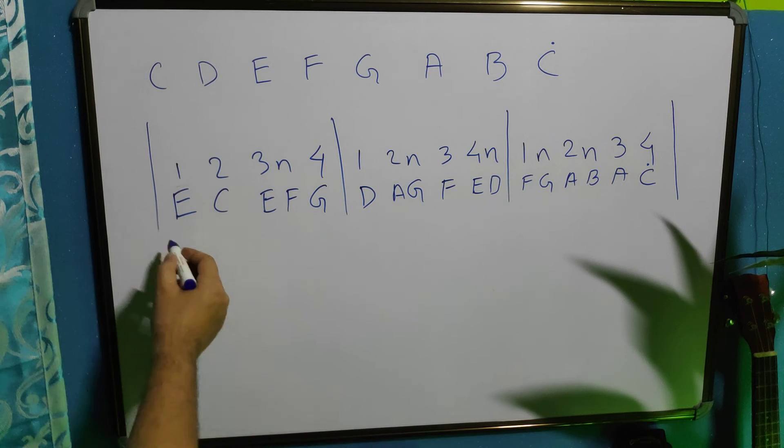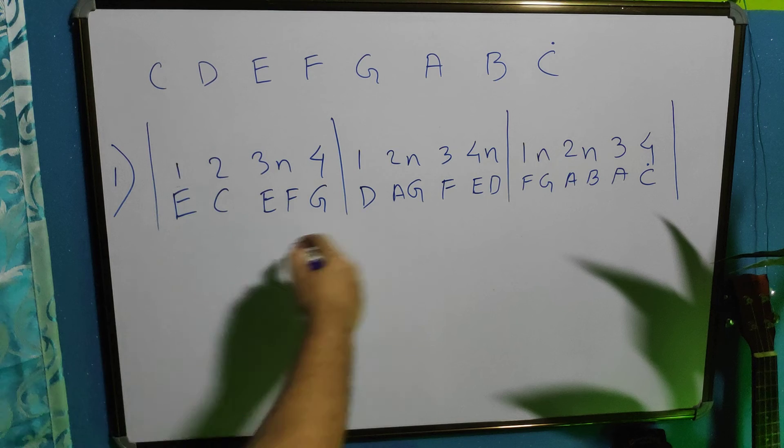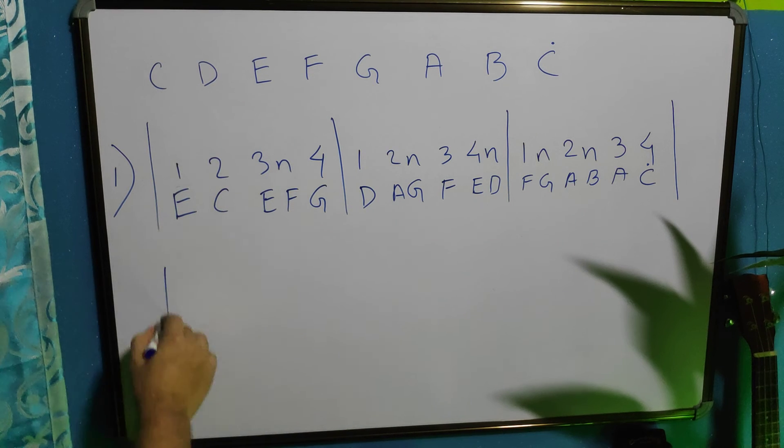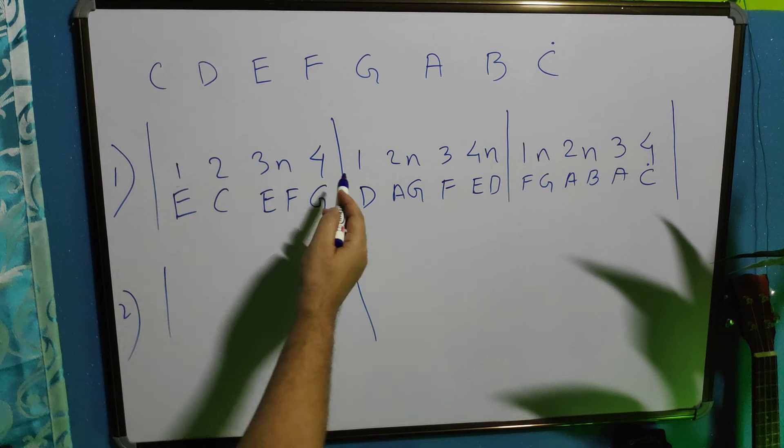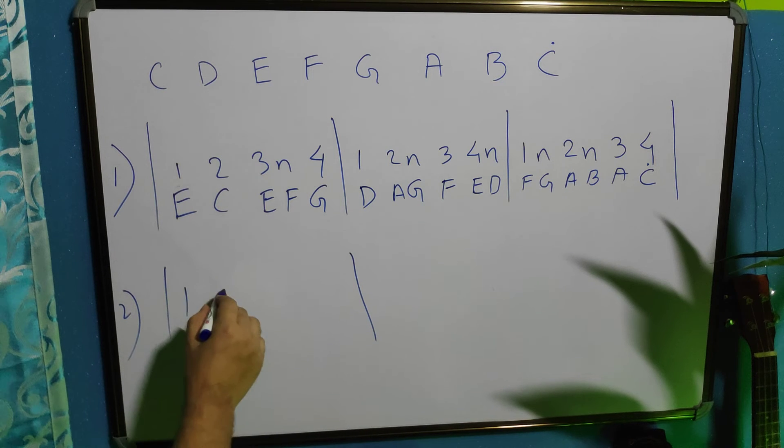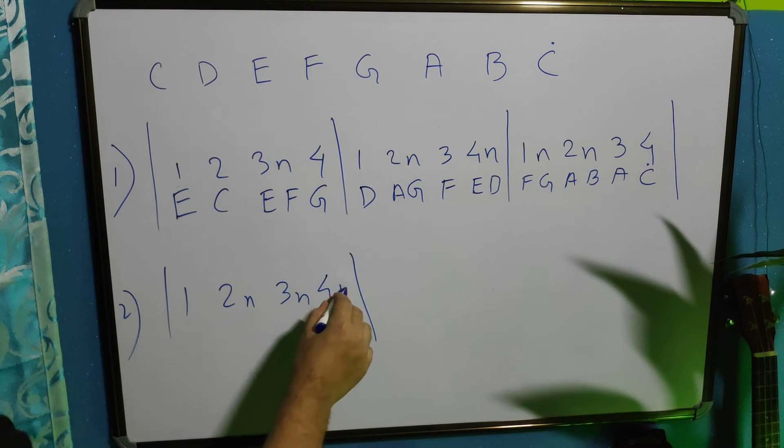Now, using the same rhythm pattern, you can change all the notes. So, this is the first line we composed. Now, in the second line, we can make some different arrangement of notes. For example, we can write 1, 2, N, 3, N, 4, N.